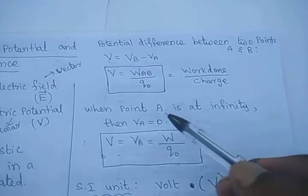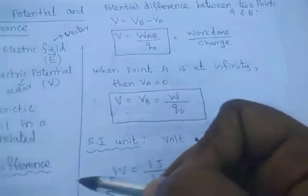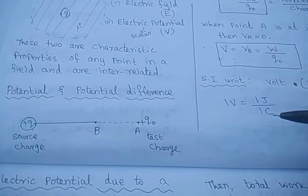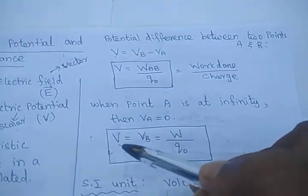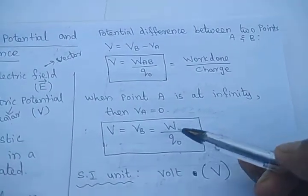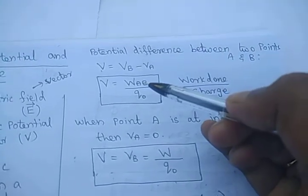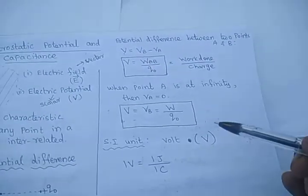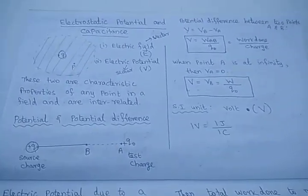If you take point A as infinity, the amount of work done to bring a charge from infinity to the particular point is called electric potential. If the work done brings a charge from one point to another point, it is called potential difference. If point A is at infinity, then the potential at A is zero. Whenever the point is far away from the source charge, the electric potential becomes zero, similar to the electric field.